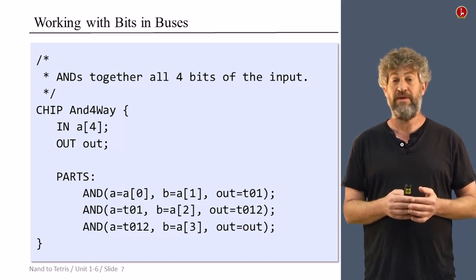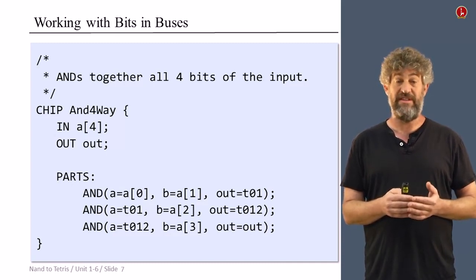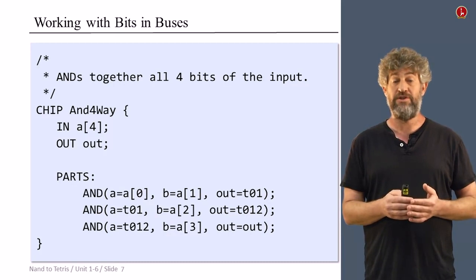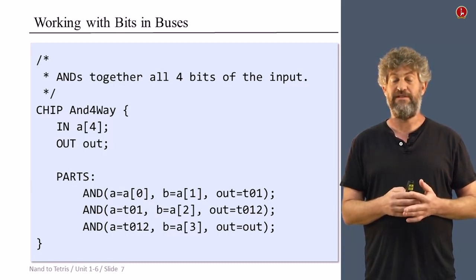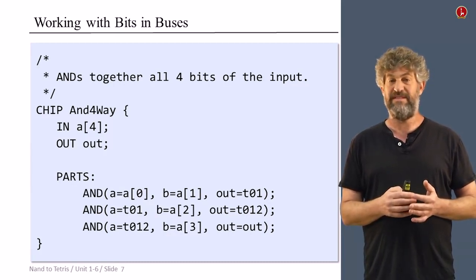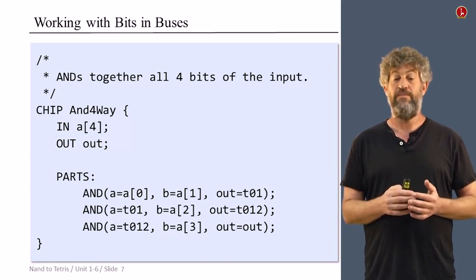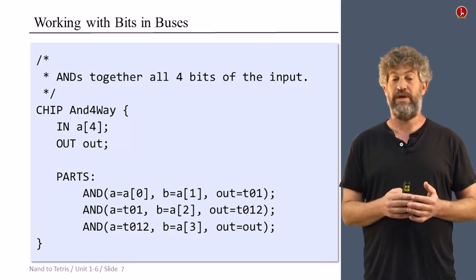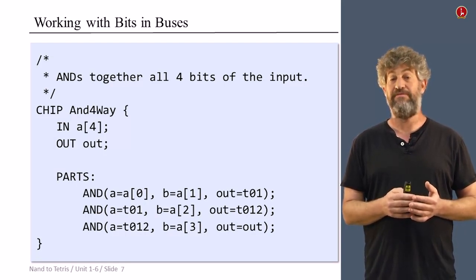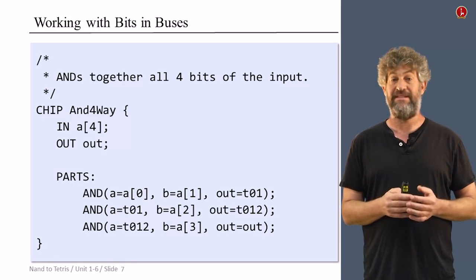And this is how we do that. In the next project, in this project, you're going to have a bunch of chips that do this. They take a bunch of bits in the bus and just convert them and mash them together into a single value, and we call this multi-way chips. We call this kind of chip And4way, which takes four bits and ANDs them together.